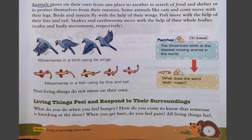Animals move on their own from one place to another in search of food, shelter, or to protect themselves from enemies. Some animals like cats and cows move with their legs. Birds and insects fly with the help of their wings. Fish move with the help of their fins and tail. Snakes and earthworms move with the help of their whole bodies. Non-living things do not move on their own.